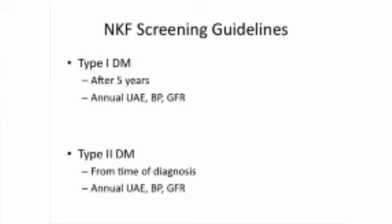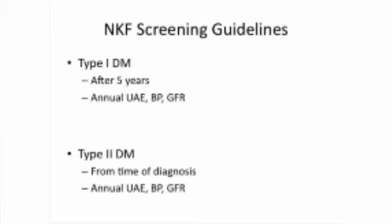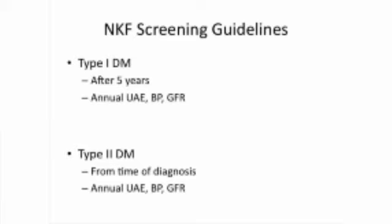I wanted to briefly touch on the screening guidelines of the National Kidney Foundation: when do you check a patient with diabetes, and how often? For type 1 diabetics, after they've had the disease for about five years, it's recommended to check the urine for protein, blood pressure, and how well the kidney is filtering. This can be diagnosed by a simple blood test called the serum creatinine. For type 2 diabetics, really from the time of diagnosis you want to start measuring protein in the urine, blood pressure, and serum creatinine — because at the time of diagnosis, you've probably had the disease for about five years already.